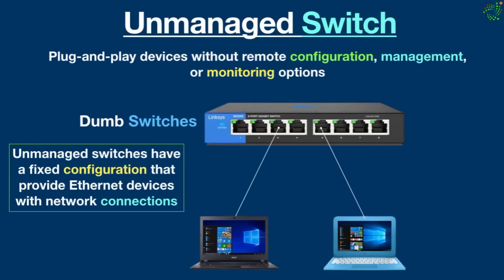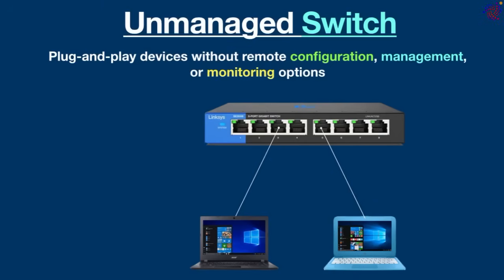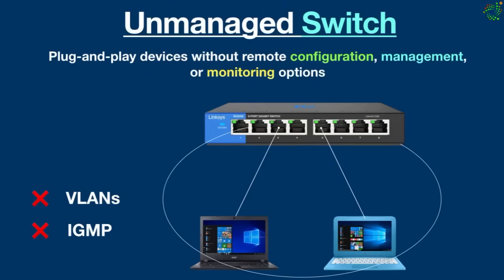Unmanaged switches are used in small networks or to add temporary groups of devices to a large network, to expand the number of Ethernet ports and connect network hotspots or edge devices in small independent networks. In contrast to managed switches, unmanaged switches do not support VLANs and Internet Group Management Protocol. Therefore, all devices connected to the switch belong to the same broadcast domain.